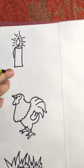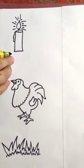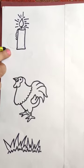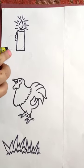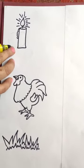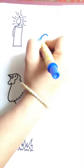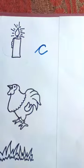Our next picture is candle. Candle. Candle. The beginning sound of candle is K. And K is the sound of C. How we will write the C? Like this. C, K, candle.